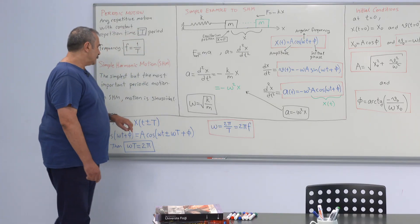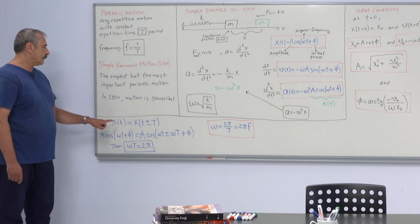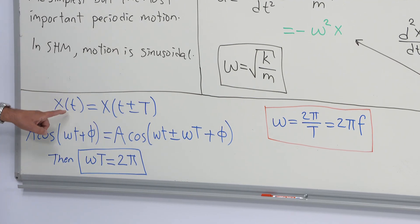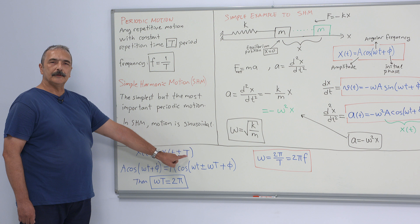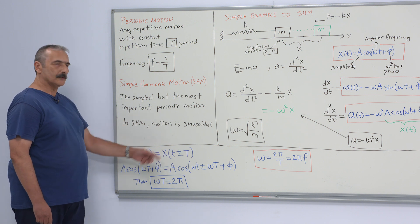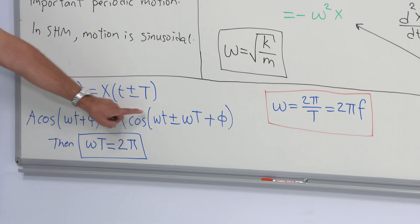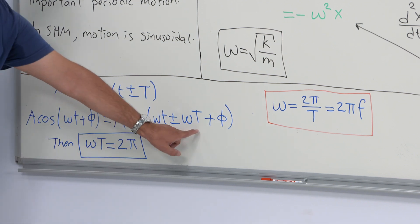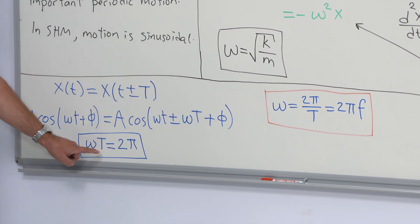Due to the periodicity, we must observe the same thing after or before one period. So inserting plus or minus one period into the displacement and expanding the expressions, we observe that omega times the period must be 2 pi.